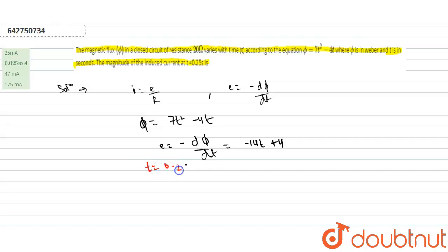0.25 which is equal to 1 by 4. So e is equal to minus 14t plus 4. Substituting t equals 0.25, which is equal to minus 14 times 1 by 4 plus 4, which equals minus 3.5 plus 4, which equals 0.5. So the magnitude is 0.5.